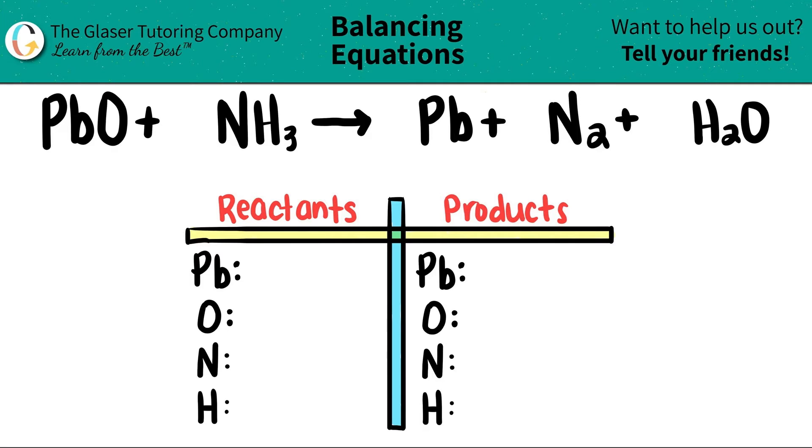Today, we are going to be balancing the equation PbO + NH3, which will yield Pb + N2 + H2O. I already wrote down our balancing chart here that's going to help us out, as well as the elements that I see on both the left and right side. Let's count how many we have of each element, and then we will start the balancing.